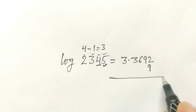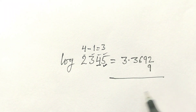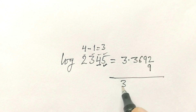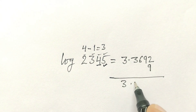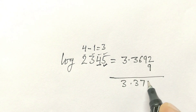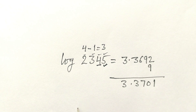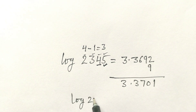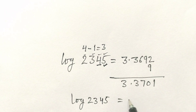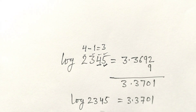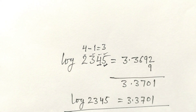Now we will add. So this will be 3.3701. So the value of log of 2345 is equal to 3.3701.